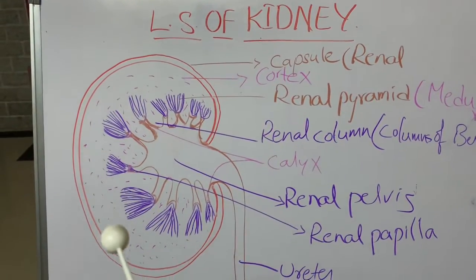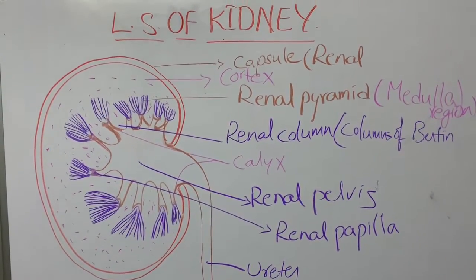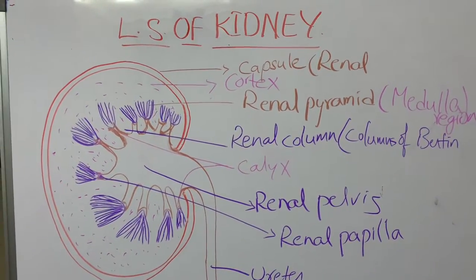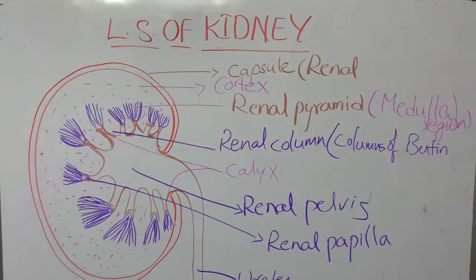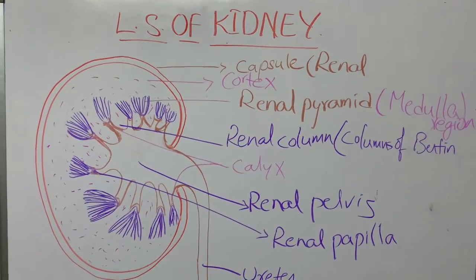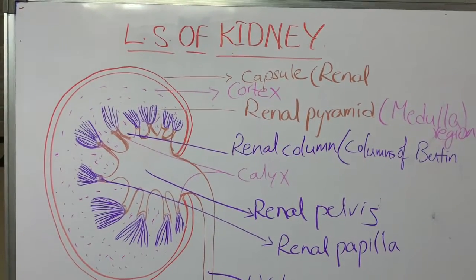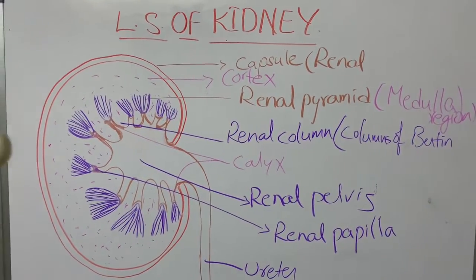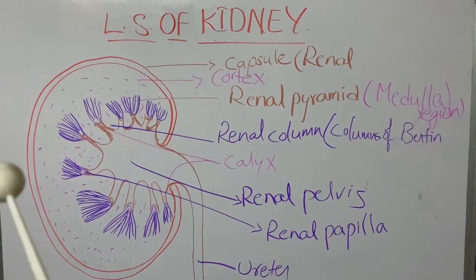The outer region of the kidney is known as the cortex, which is dark red in color. This is because the renal artery entering the kidney is divided into numerous small capillaries in the cortex region. The cortical region contains the structural and functional units of the kidney — nephrons. Each kidney contains one million nephrons, so blood supply is numerous in the cortical region.